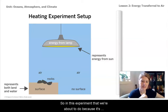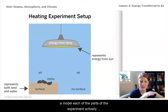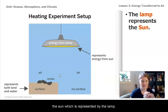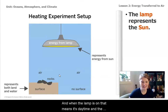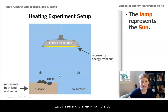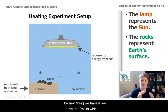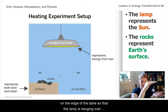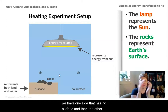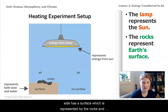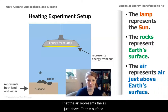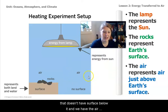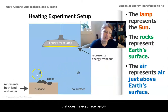In this experiment that we're about to do, because it's a model, each of the parts of the experiment actually represent something else. The sun is represented by the lamp, and when the lamp is on, that means it's daytime and the earth is receiving energy from the sun. The rocks represent the surface of the earth, and those are set right on the edge of the table so that the lamp is hanging over. We have one side that has no surface, and the other side has a surface represented by the rocks. And the thermometer represents the air just above earth's surface — we have the air that doesn't have a surface below it, and the air that does have a surface below it.